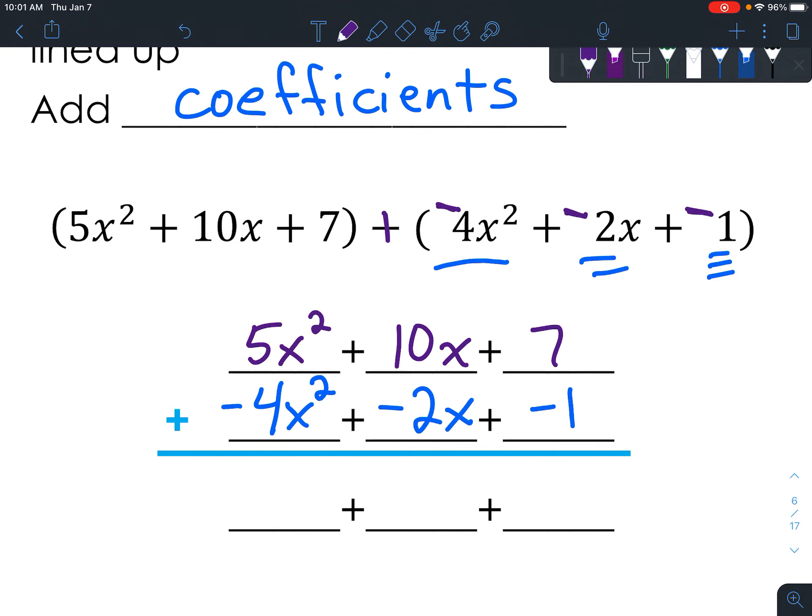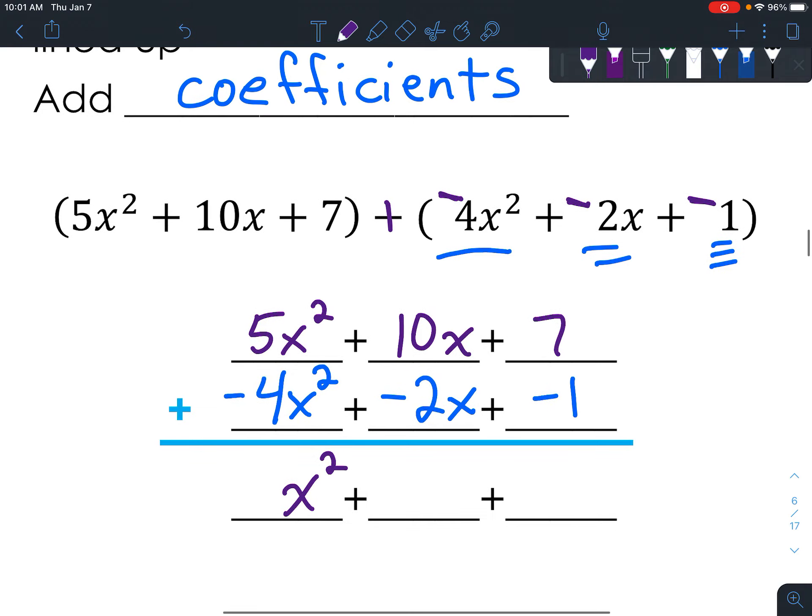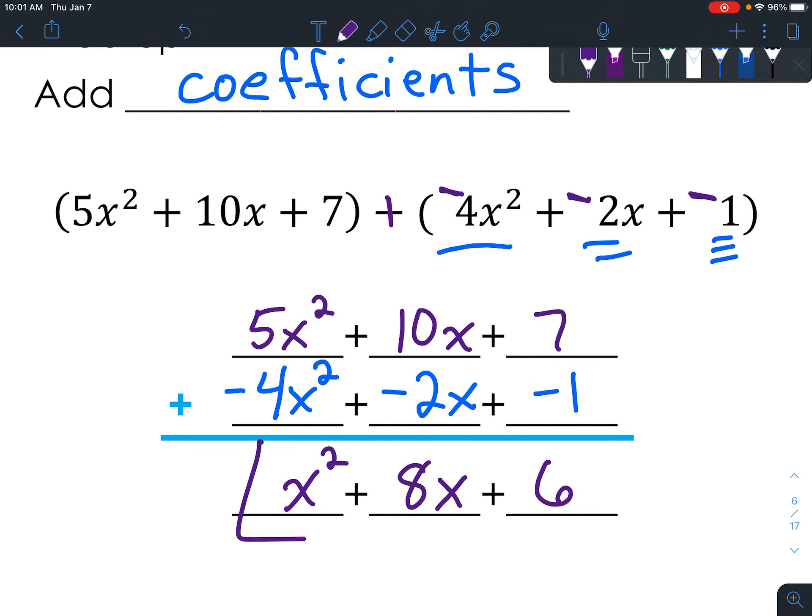So we end up with 5x squared minus 4x squared. Remember the x squared stays the same, and just the coefficients are subtracted, because they tell you basically how many you have. So if we have 10x's and we take away 2 of those x's, we have 8x's left. And if we have the number 7 and take away 1, then that's number 6.